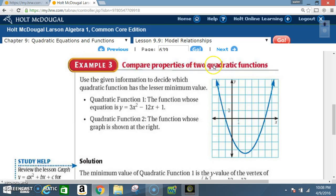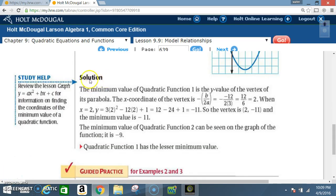Example 3: Compare properties of two quadratic functions. Use the given information to decide which quadratic function has the lesser minimum value. Quadratic function one, the function whose equation is Y equals three X squared minus 12 X plus one. Quadratic function two, the function whose graph is shown at the right. Solution. The minimum value of quadratic function one is the value of the vertex of its parabola. The X coordinate of the vertex is negative B over two A. And that's going to equal negative 12 over two times three. Don't forget there's a negative sign on the outside, and that B is a negative 12. So now a negative divided by a negative is going to be positive. So you end up with 12 divided by six. 12 divided by six is two.